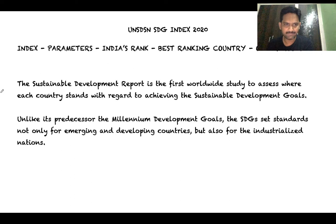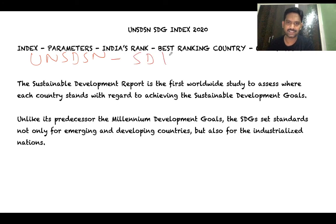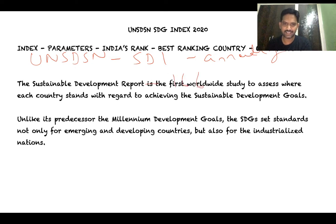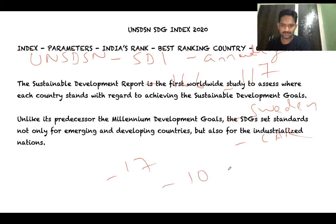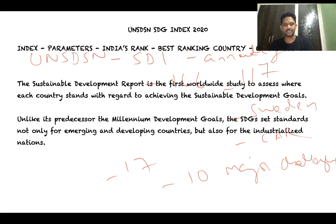To summarize the SDG Index: the United Nations Sustainable Development Solutions Network releases it annually. This report ranked 166 countries and India's rank is 117. The best ranking country is Sweden and the worst is the Central African Republic. There are no specific parameters — the 17 goals themselves act as parameters. India faces major challenges in attaining 10 of the 17 Sustainable Development Goals.